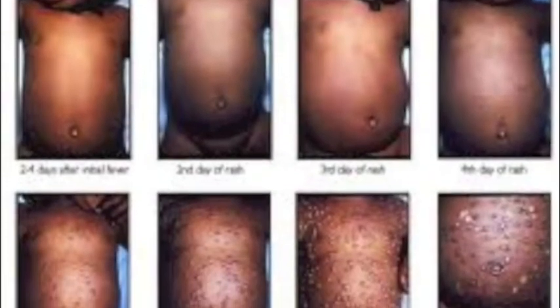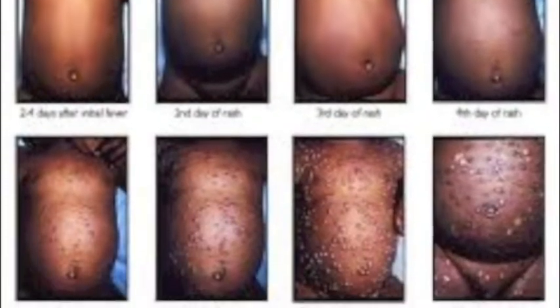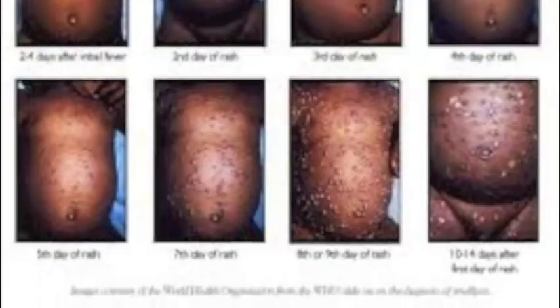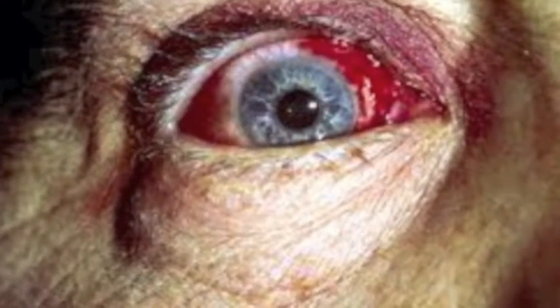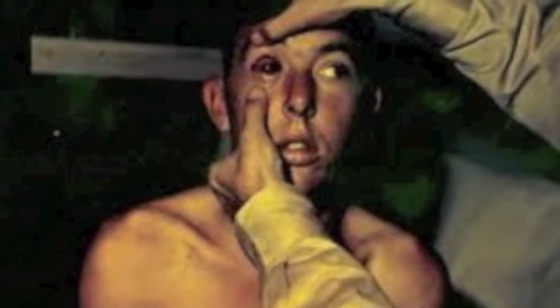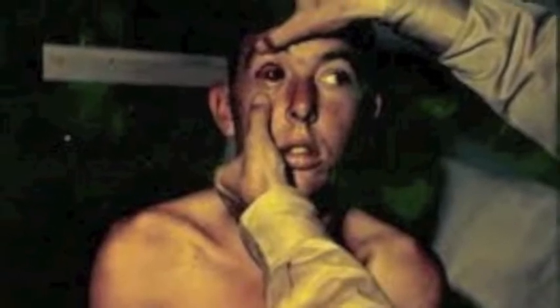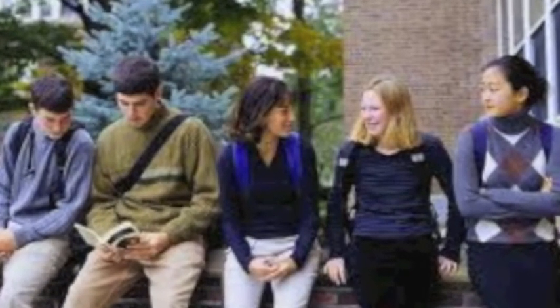The third type is hemorrhagic smallpox, which is about 100 percent fatal. The most extreme type is flat hemorrhagic smallpox, in which the skin does not pustulate but instead remains flat and smooth. The skin will also darken and appear charred. Bleeding will occur out of the orifices. The whites of the eyes will turn red, and if the patient survives long enough, they will eventually turn black. Hemorrhagic smallpox is most common in teenagers.